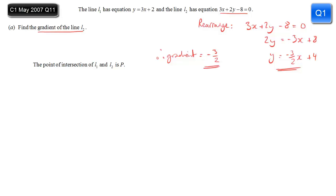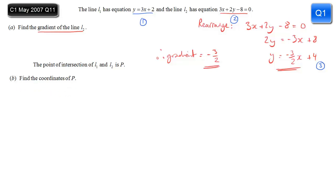Next, we're given that the two lines L1 and L2 intersect at P, and we're asked to find the coordinates of P. When you want to find the coordinates of the intersection of any two lines, you simply solve them simultaneously. We have a choice — we could equate equations 1 and 3 since they're both in the form y equals something, or we could substitute equation 1 into equation 2. I'm choosing the latter, as it will mean we only have to deal with fractions at the end.